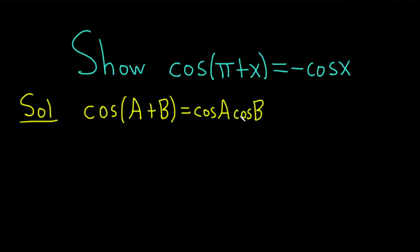And then you switch the sign. So because there's a plus, you want to put a minus. And then it's sine sine. Sine A, and then sine B.